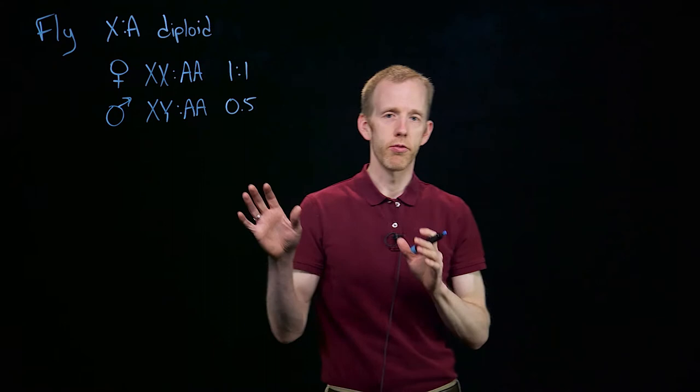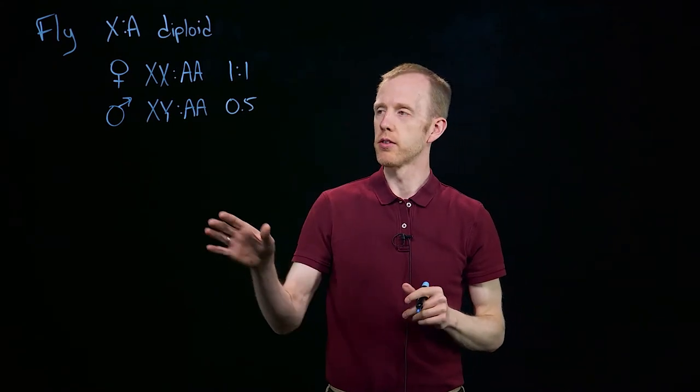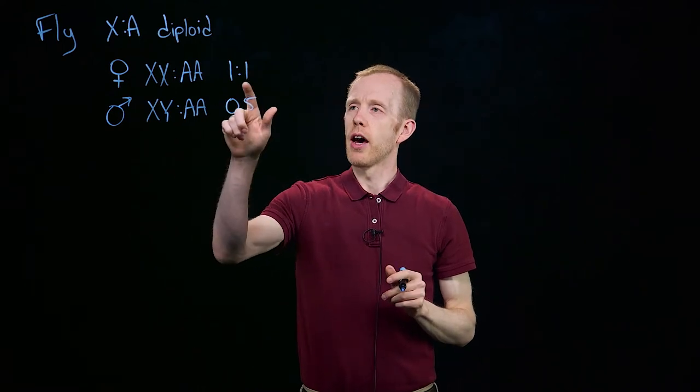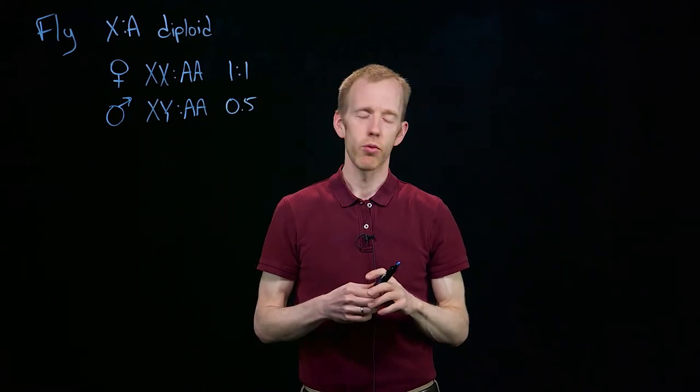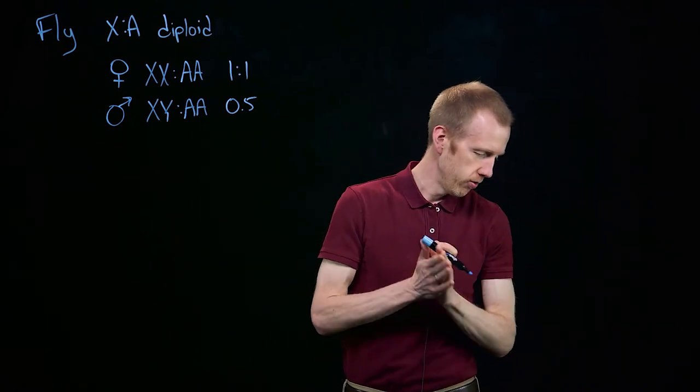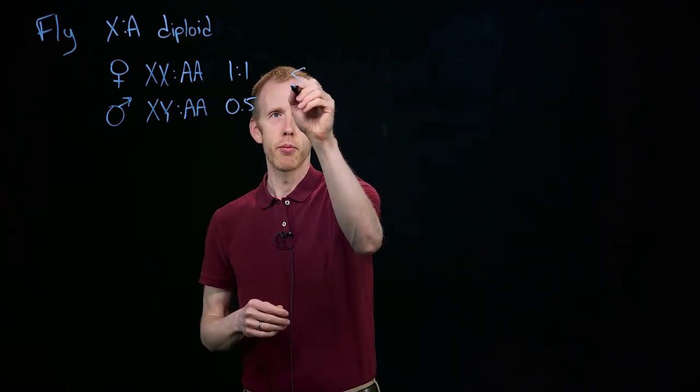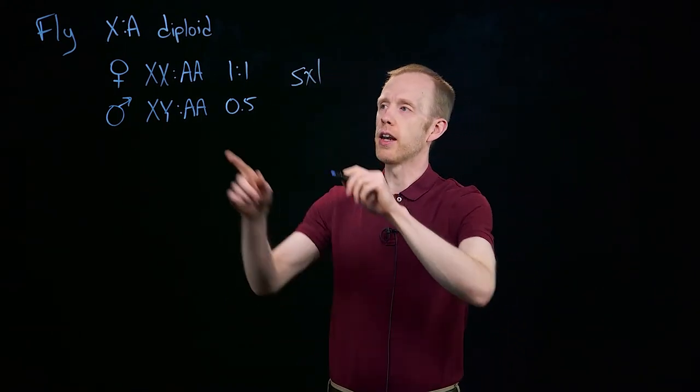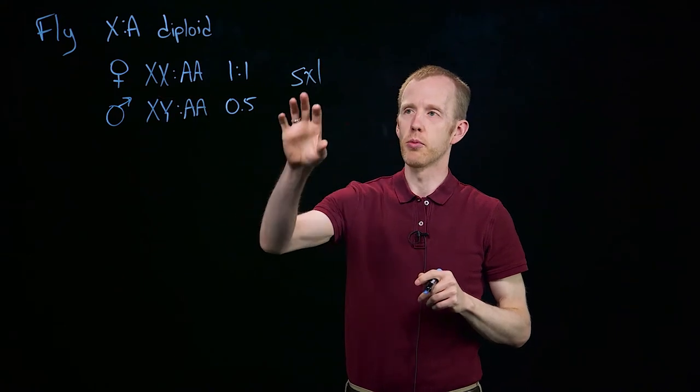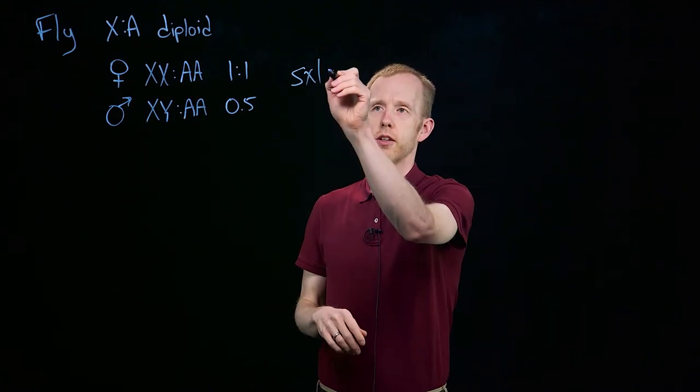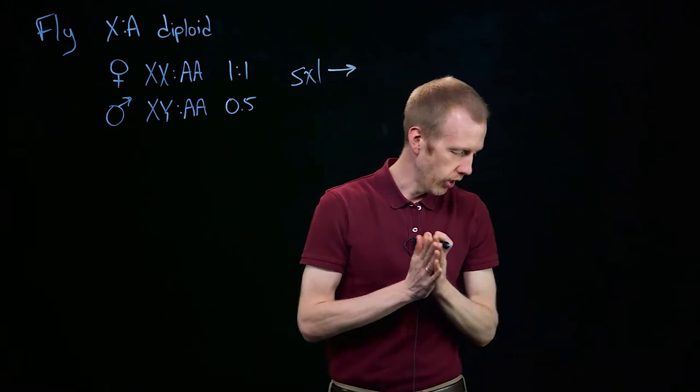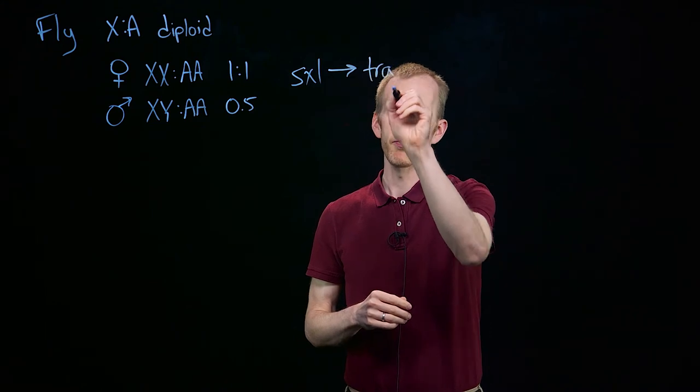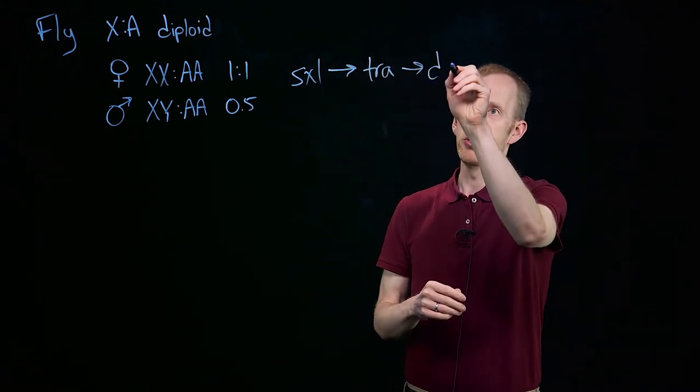This was the first organism in which the genetic basis of sex determination was identified. It turns out that organisms that have this 1:1 ratio have a female version of a protein called sex lethal, which is abbreviated SXL, and if you have two copies of the X chromosome, you make a female version of sex lethal, which causes the production of a female version of a protein called transformer, which creates a female version of a protein called double sex.